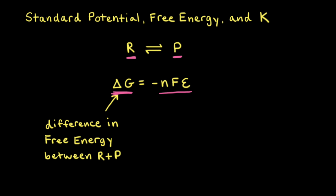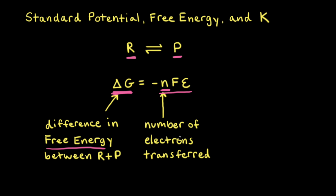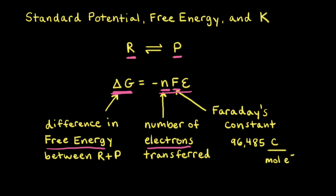ΔG is the instantaneous difference in free energy between the reactants and the products. n refers to the number of electrons that are transferred in the redox reaction. F is Faraday's constant, which tells us the charge carried by one mole of electrons — one mole of electrons carries 96,485 coulombs.